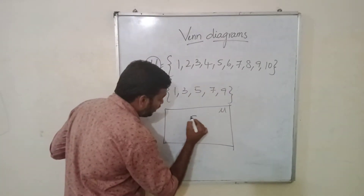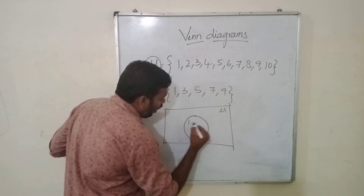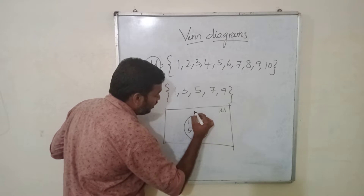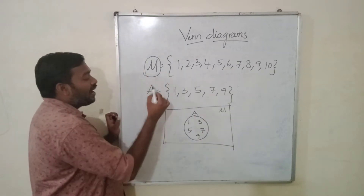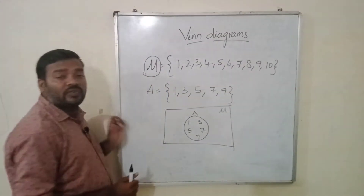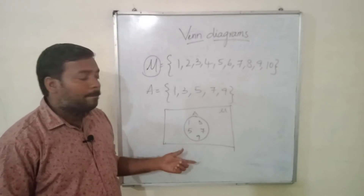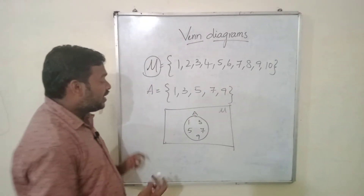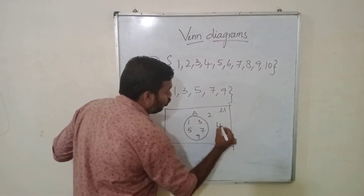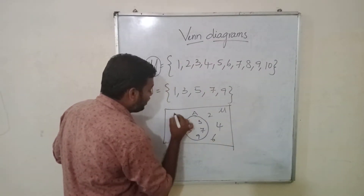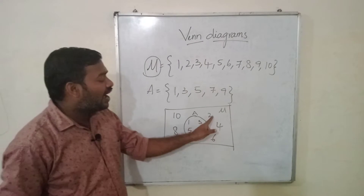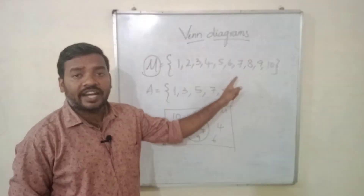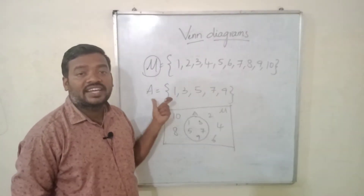And we have to write A as 1, 3, 5, 7, 9. This is set A. And what are the elements which are not present in A but have to be present in the universal set? That is 2, 4, 6, 8, 10. These are the 5 elements which are present in the universal set but not in set A.